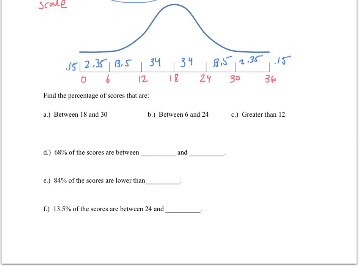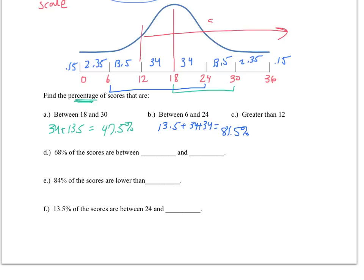Let's go ahead and take a look at this. The first one is we want to be between 18 and 30. So between 18 and 30 is this region right here, and if we add up 34 plus 13.5, we will get that 47.5% of the data lies in that region. Between 6 and 24, if I were to do the same thing, I would add up these percentages. So 13.5 plus 34 plus 34 gives me 81.5%. Now when I'm looking at greater than 12, it's easier to just look at the fact that anything greater than 12, that would be from here on. And I know that the middle line represents 50% of my data. So if this section is 34, then I have 34 plus 50, which gives me 84%.